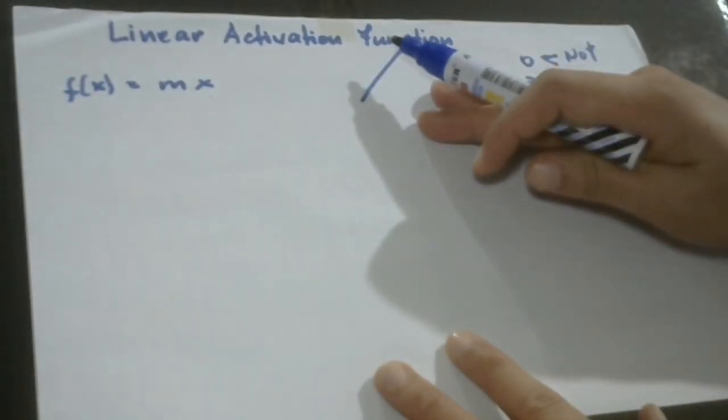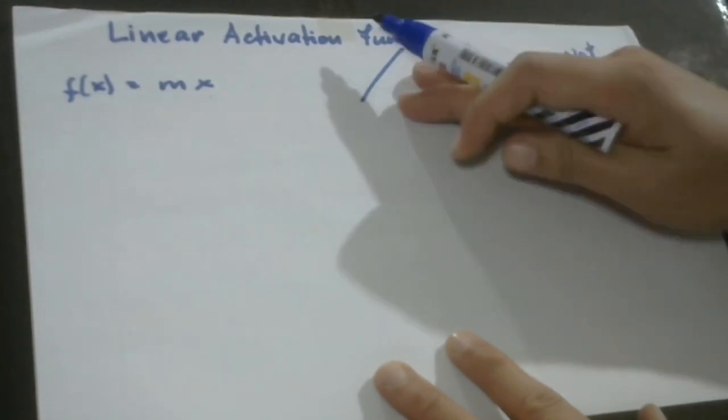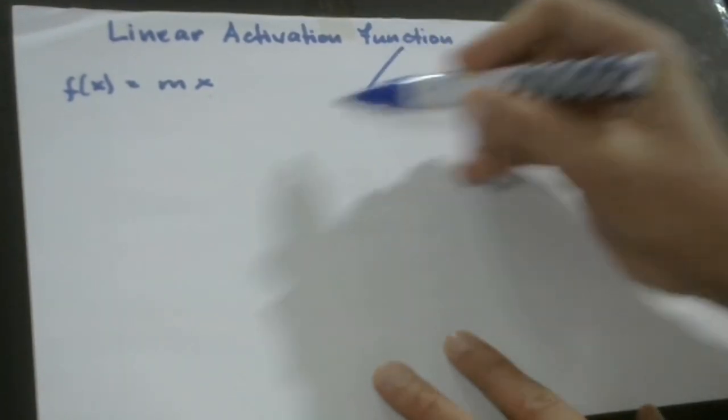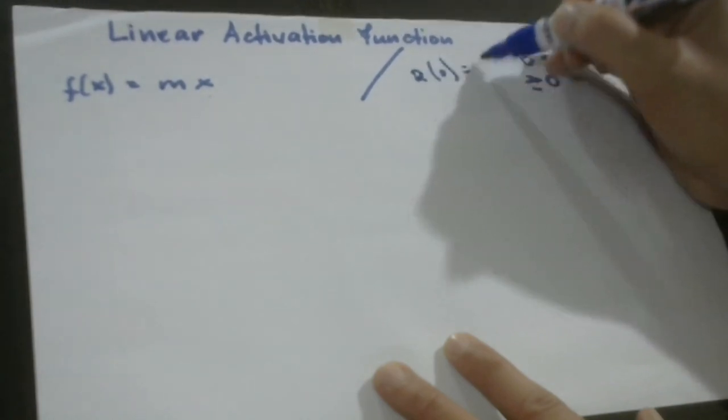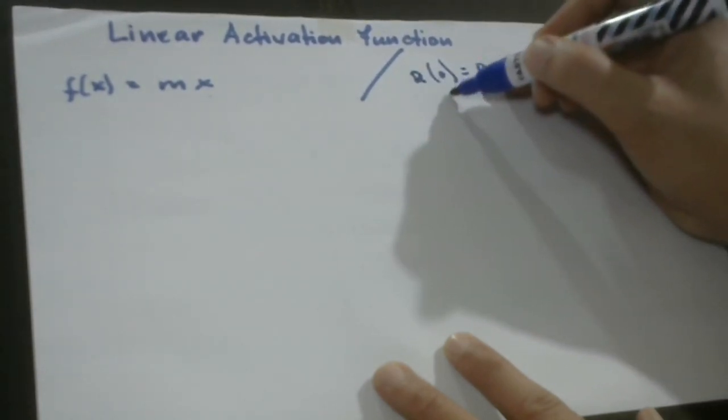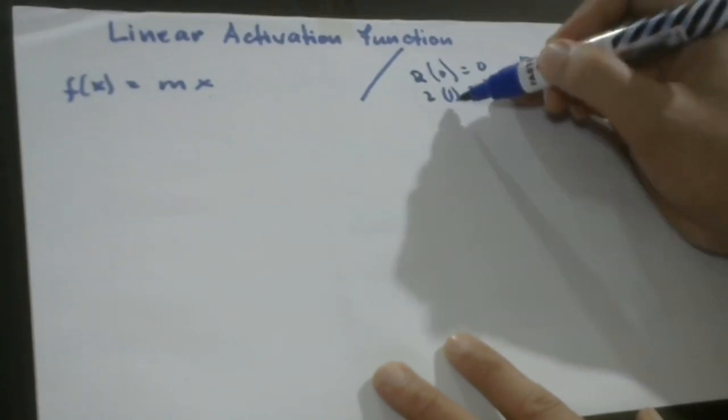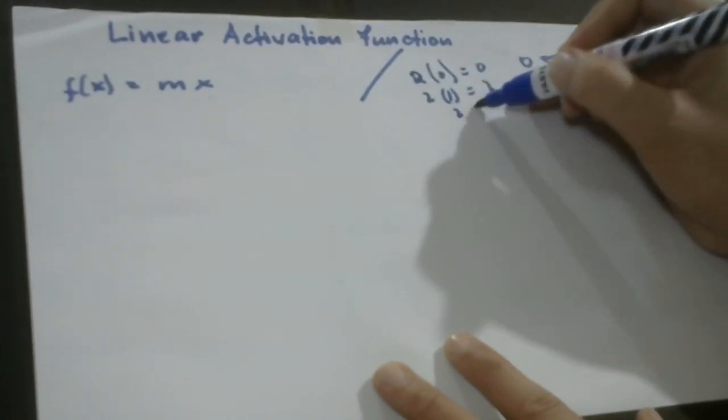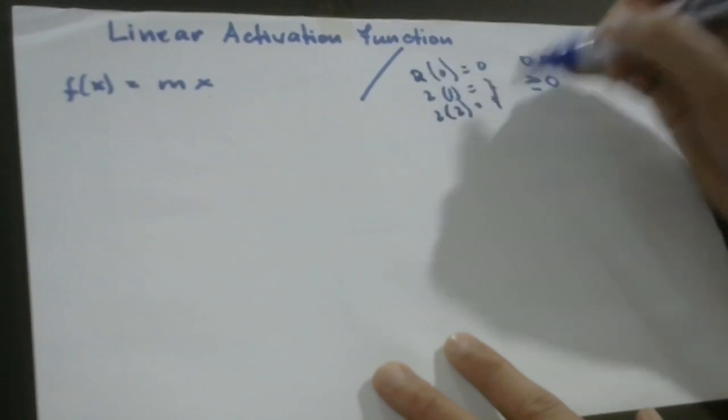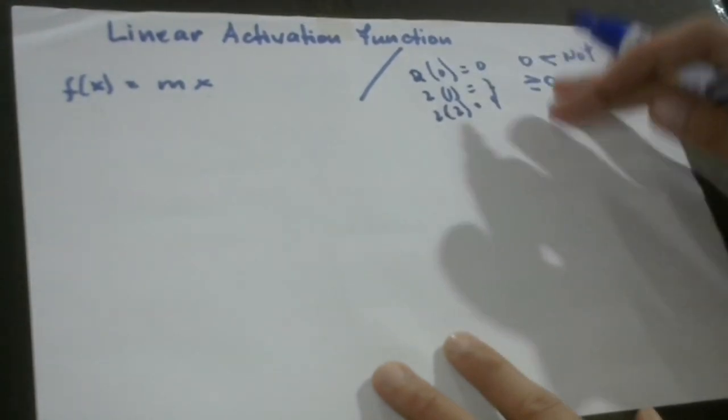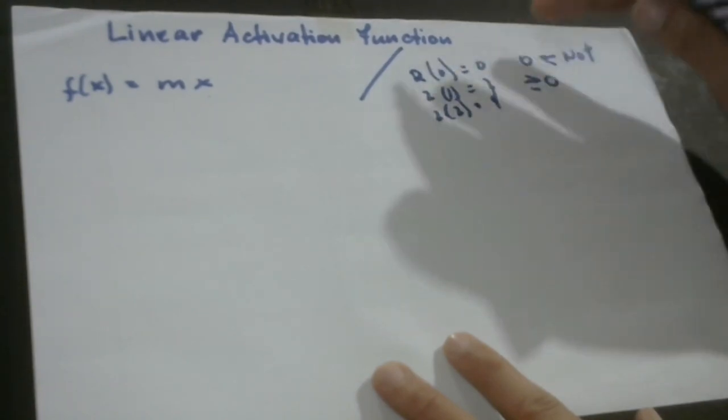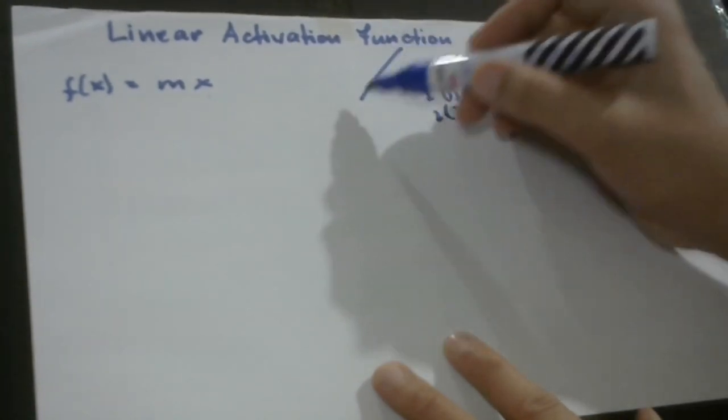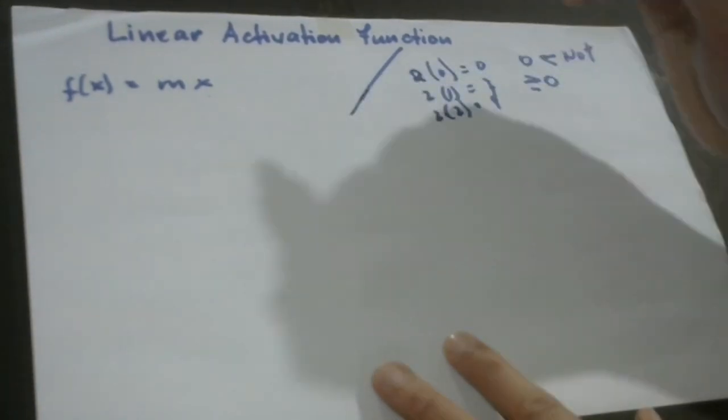The rate of the slope here increases when the input rate also increases. So for example, let's have m equal to 2, and x equal to 0, then it becomes 0. When x equals 1, then we have 2. When x equals 2, then this becomes 4. So as you can see in this case, the value of our activation function increases when the rate of the input also increases, and that's why we have here a straight line.